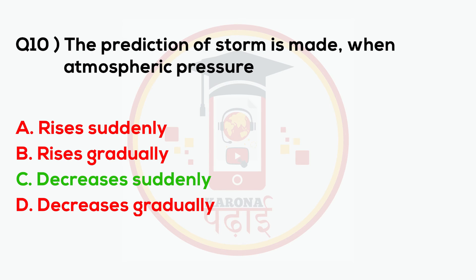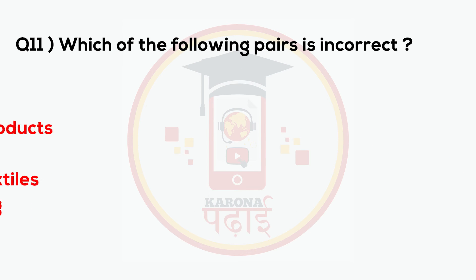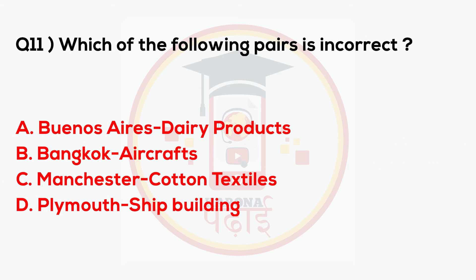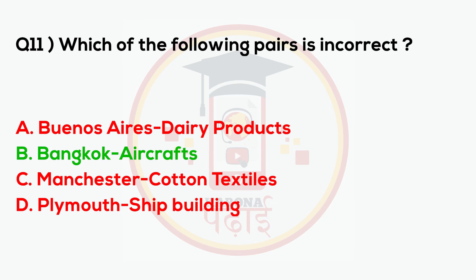Answer: Decreases suddenly. Which of the following pairs is incorrect? Answer: Bangkok — aircraft.